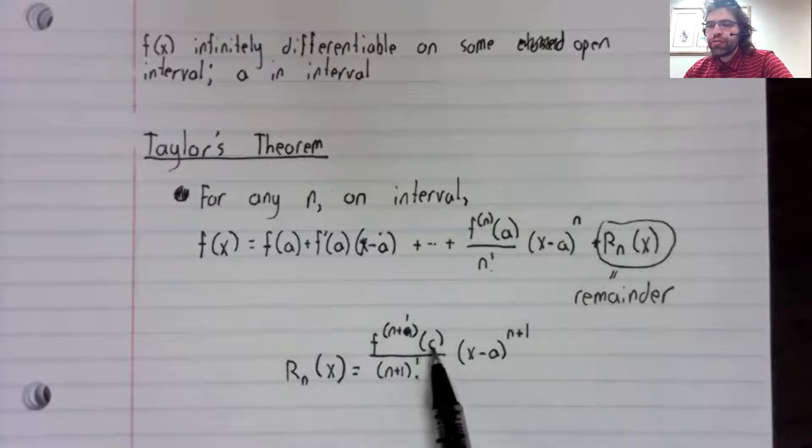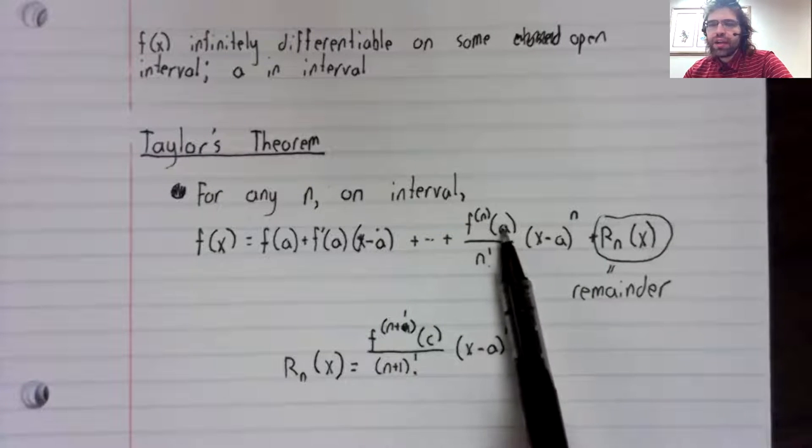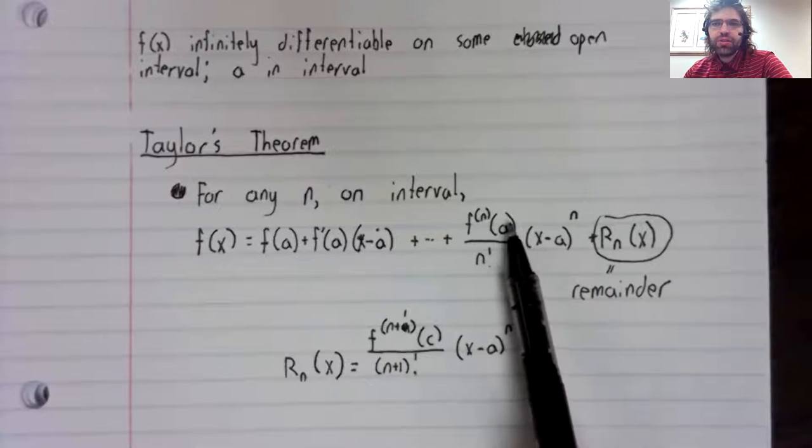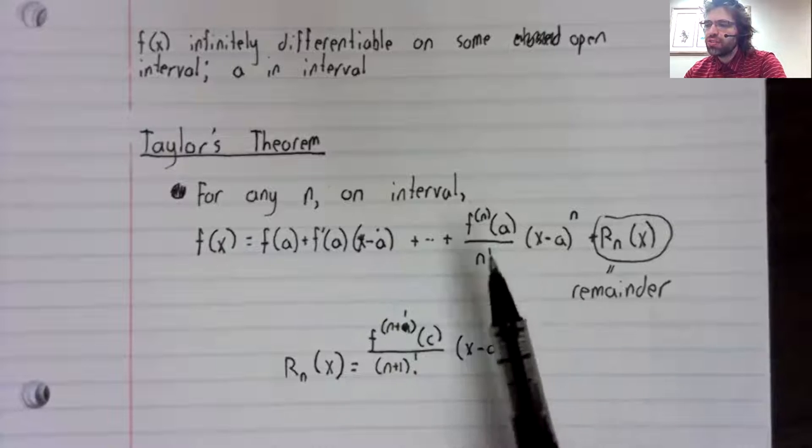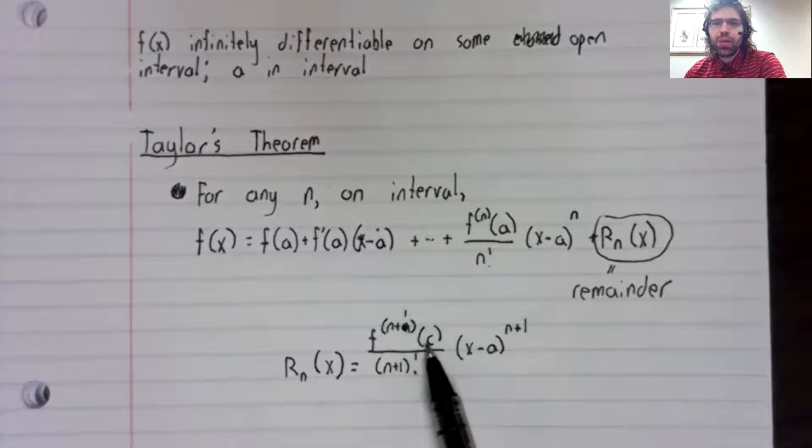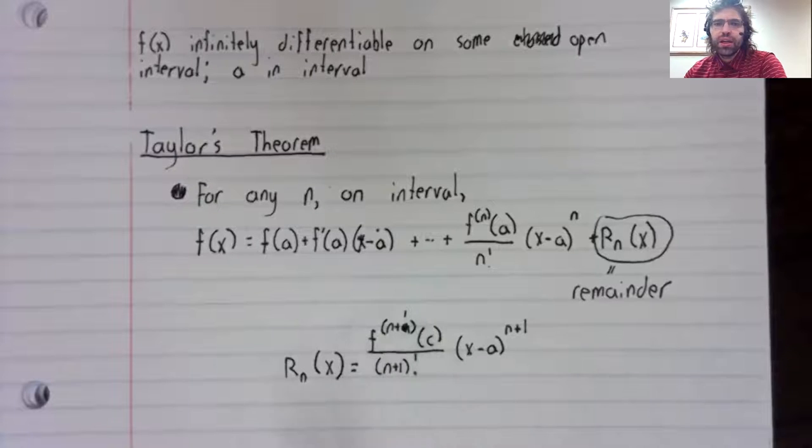The only difference is that instead of having a, the center of the Taylor series, we have some other number c. And c depends on x. C is between a and x.